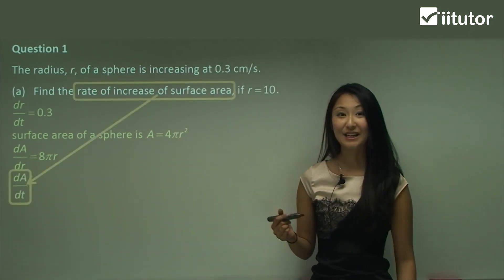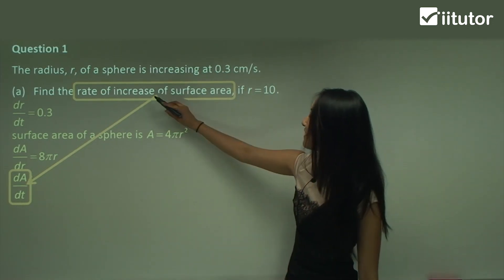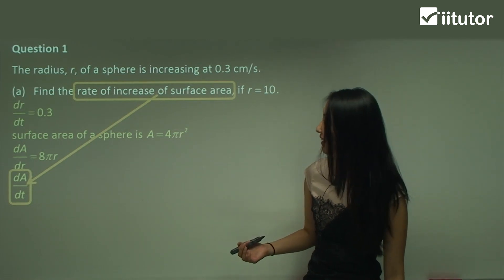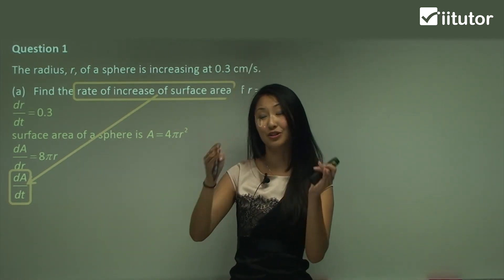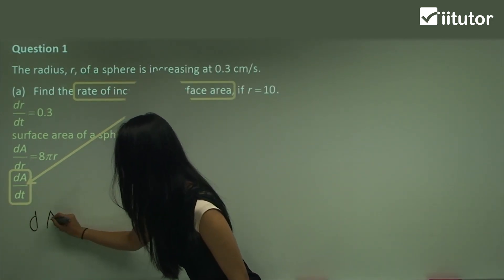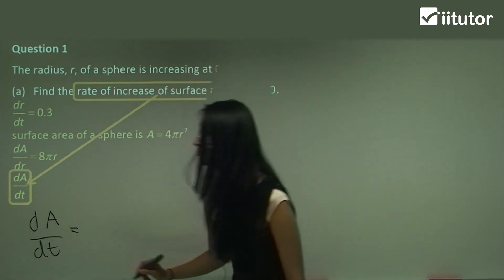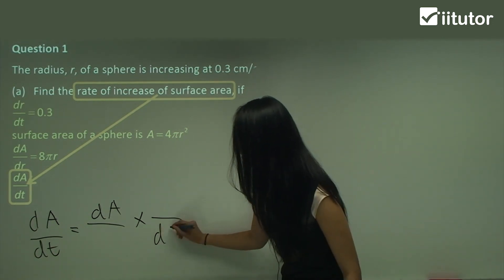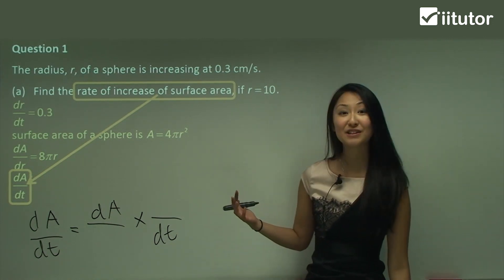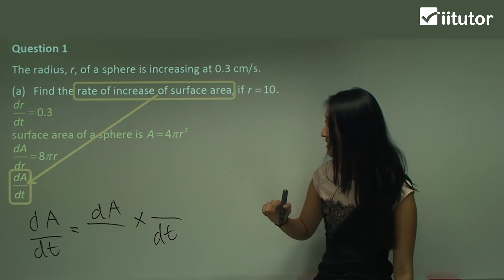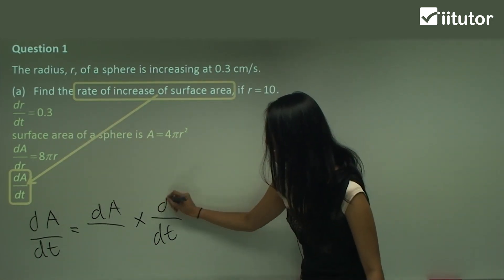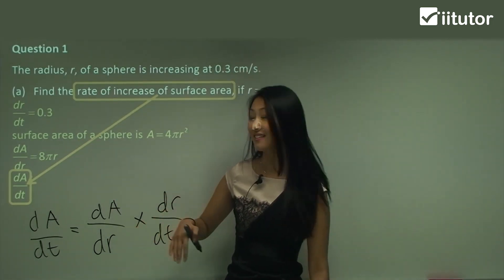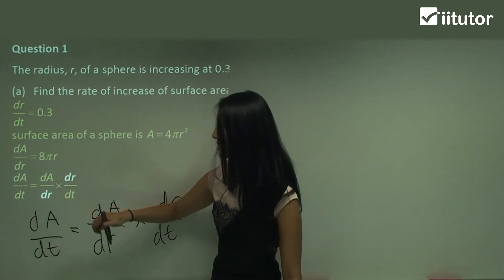Now we work out what we actually need to find: the rate of increase for the surface area, which is dA over dt. This is where we need to separate it into two rates of change because we can't work this out straight away. So dA on dt equals dA on something multiplied by something on dt. A really good way to find what goes there is to look at the information you already have. You see that you already have dr on dt, so it only makes sense for dr to go here, and you must put dr here as well. Luckily, we also have dA on dr.